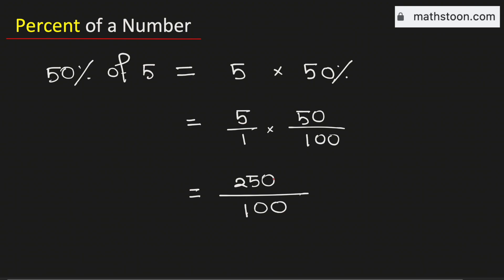Now cancel the common 0. So it will be equal to 25 over 10, which is same as 2.5.